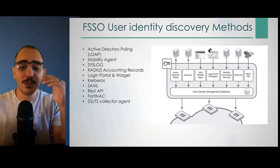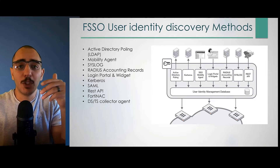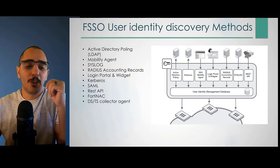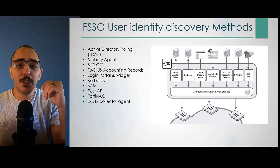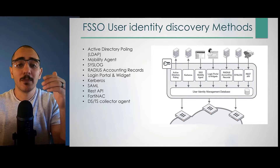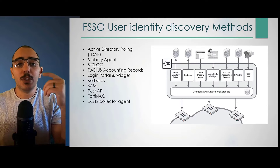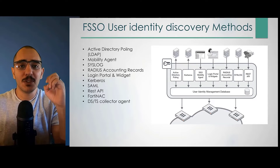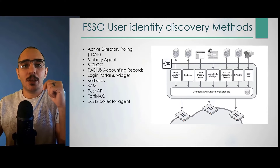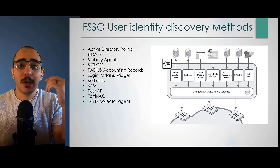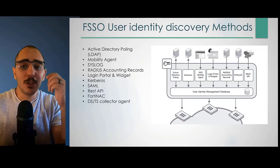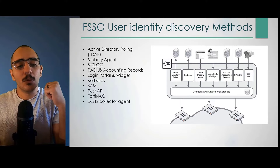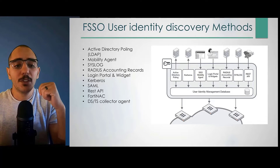One user identity discovery method is active directory polling — it's able to pull information from the active directory itself using LDAP. Another method is mobile agent. In this case, you don't need to configure FortiAuthenticator to pull from active directory. Instead, you install a client app — FortiClient — on each of the client machines. That agent provides the user logon information, IP address, any changes in IP addresses for that user, and user logout information. FortiAuthenticator is also able to pull user identity information from syslog.